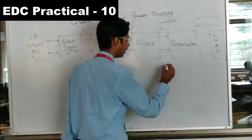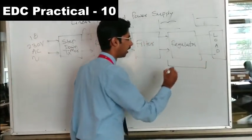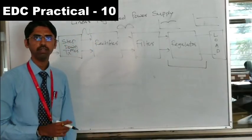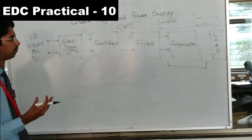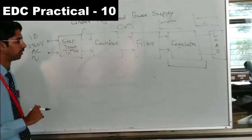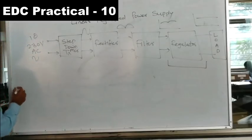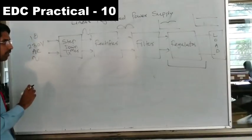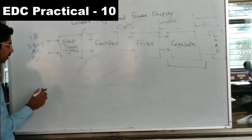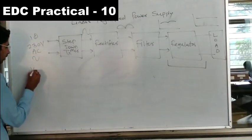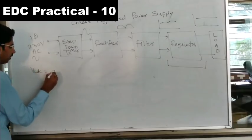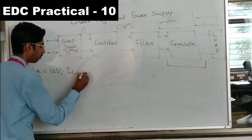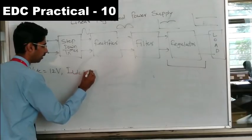Our basic task is to design a three-terminal IC voltage regulator at certain DC voltages and currents. We will design a linear regulated power supply at a DC voltage of 12 volts with a DC current of 1 ampere.